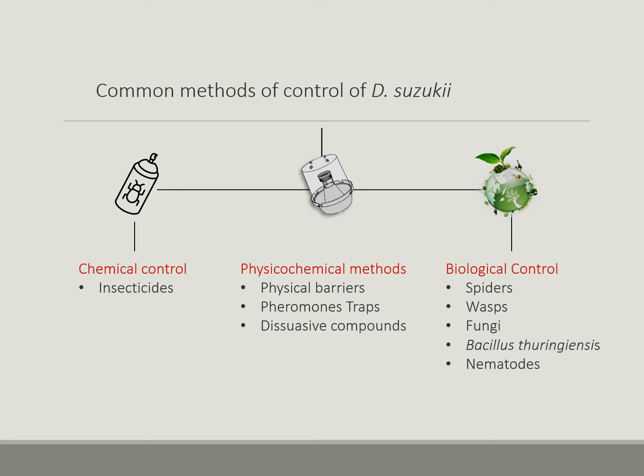The control of the diffusion of this pest is carried out with various methods based on different strategies, but the use of pesticides is still extremely common. In addition to synthetic compounds with insecticidal activity, other methods less invasive for the environment have been tentatively applied, among them physical barriers, pheromone traps, natural substances with deterrent action, insecticides of natural origin, and of course biological insecticides.